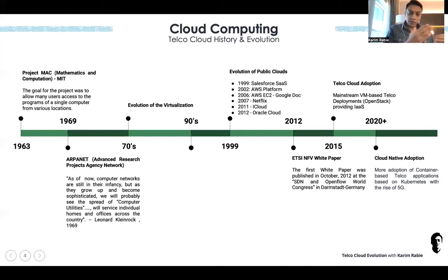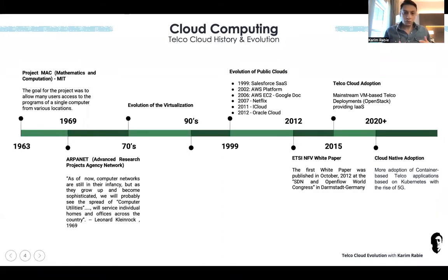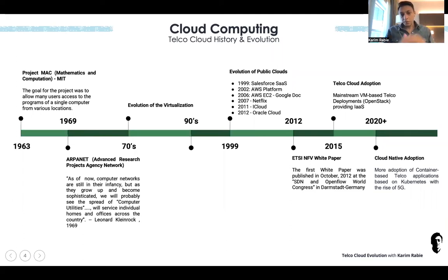From the 1970s to the 1990s, there were many enhancements and we saw the adoption of virtualization mainly in IT and enterprises. But by that time, the vision of Telcos adopting cloud was not there, because Telcos in the 1990s were all running legacy technologies like fixed networks, ATM, and frame relay.